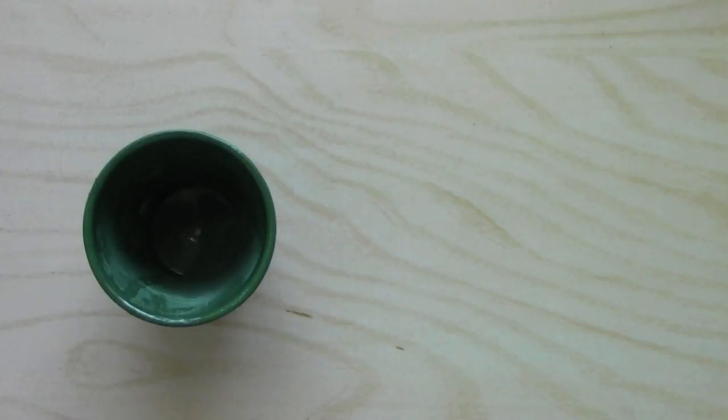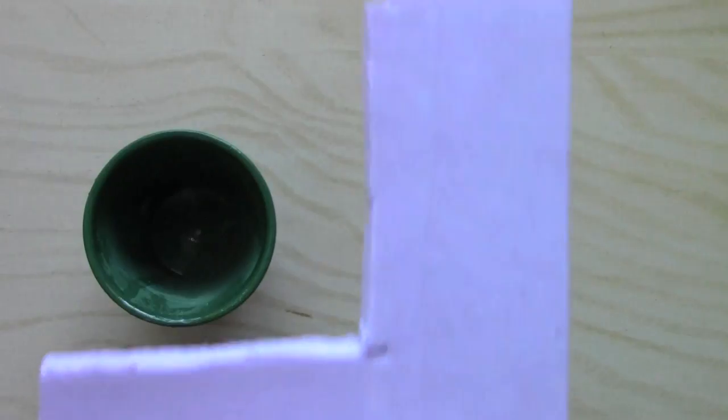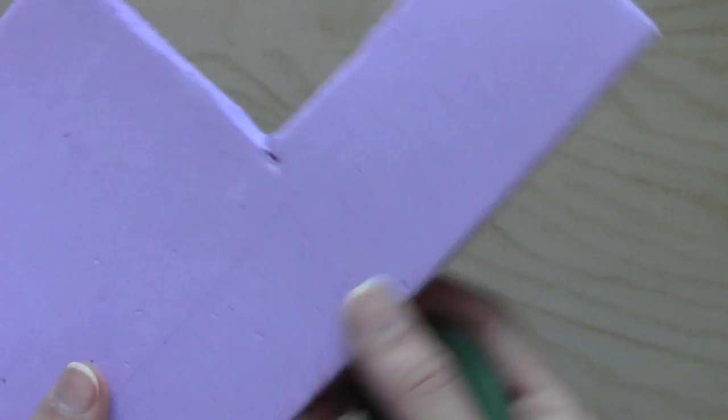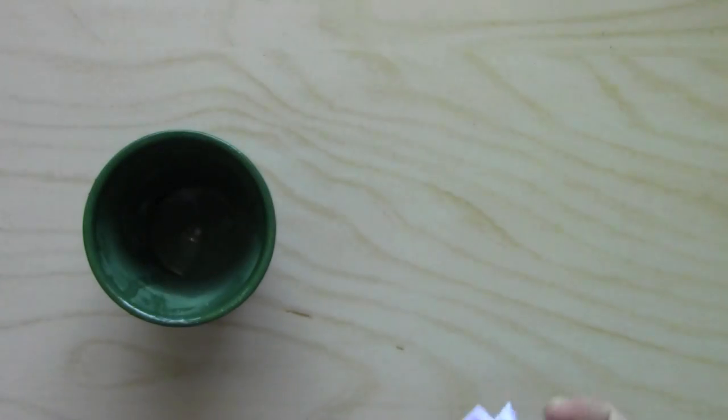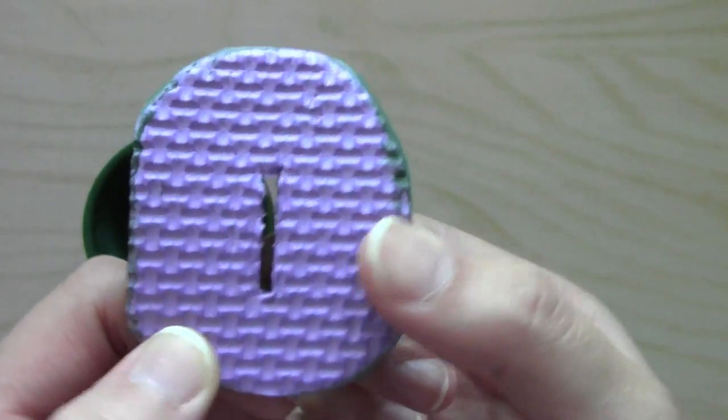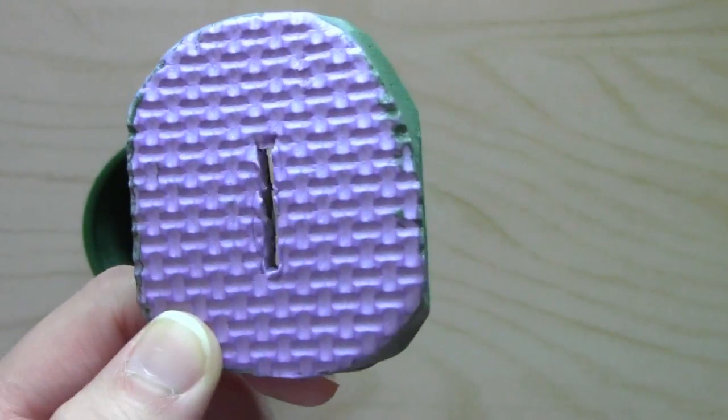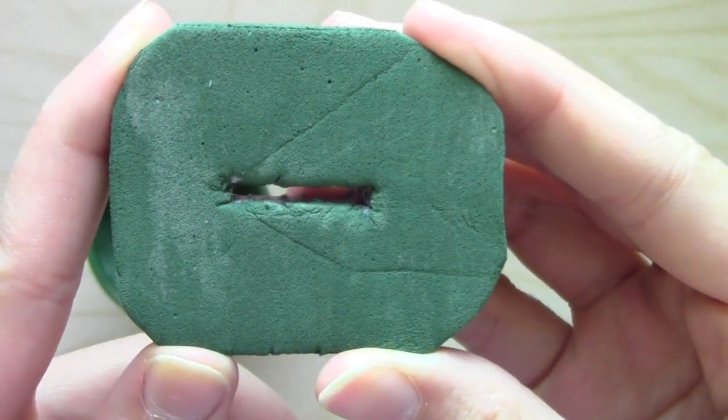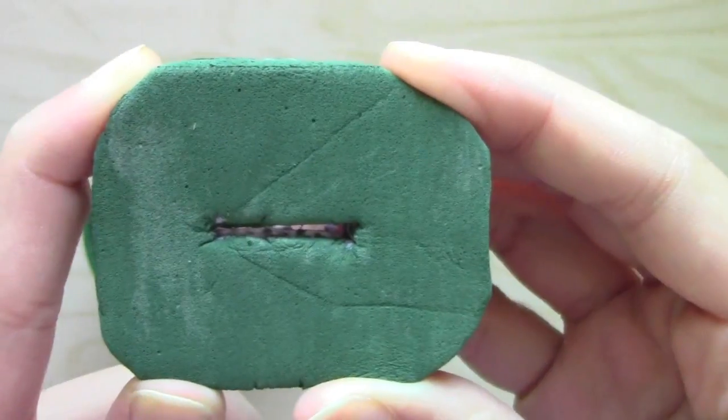To fasten the piranha plant to the pot, you'll need some sort of foam. This is from one of those children's playmat foams that I got and all I did was cut out a small circular piece, made a slot in here for the bottom root to go and I also painted it green to match the pot.